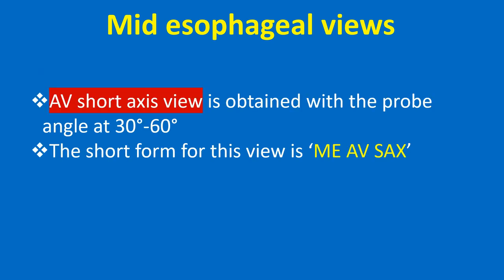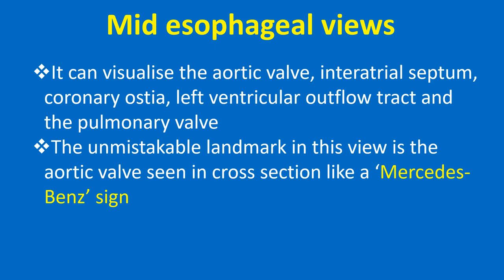The AV short axis view is obtained with the probe angle at 30-60 degrees, known in short as ME AV SAX. It can visualize the aortic valve, intra-atrial septum, coronary ostia, left ventricular outflow tract, and the pulmonary valve. The unmistakable landmark in this view is the aortic valve seen in cross section, like a Mercedes-Benz sign.